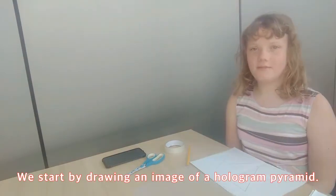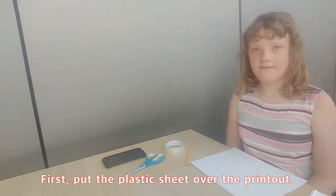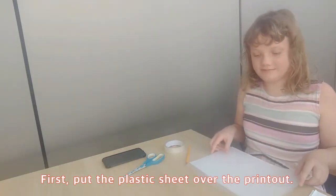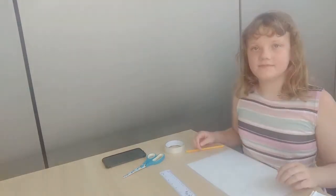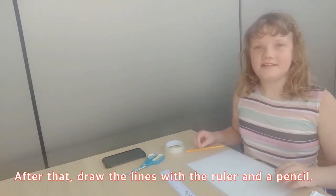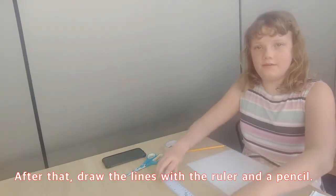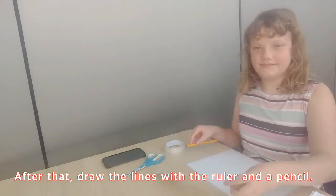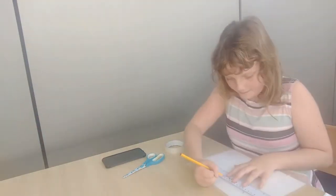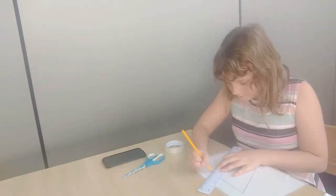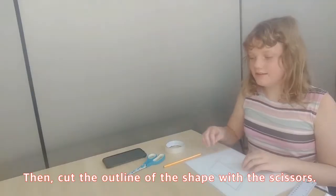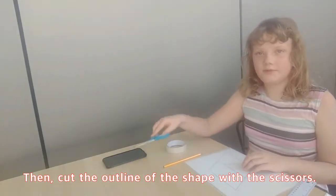We start by drawing an image of a hologram pyramid. First, put the plastic sheet over the printout. After that, draw the lines with a ruler and a pencil. Then, cut the outline of the shape with scissors.